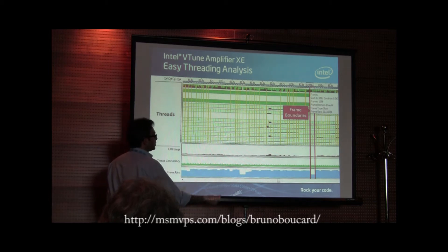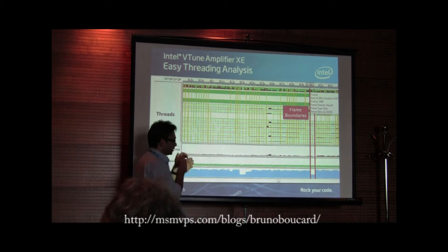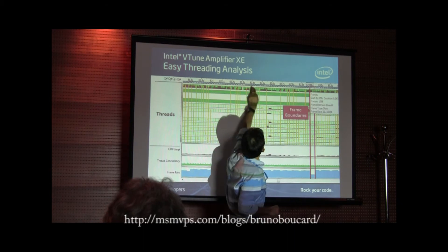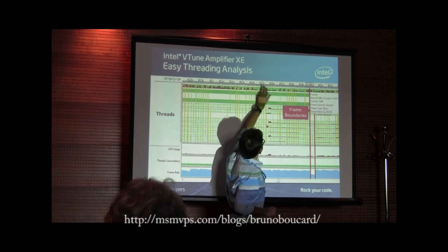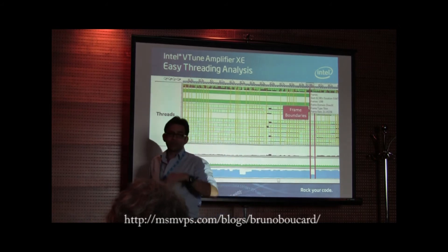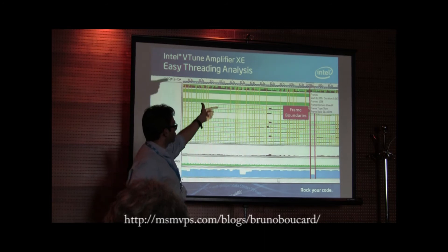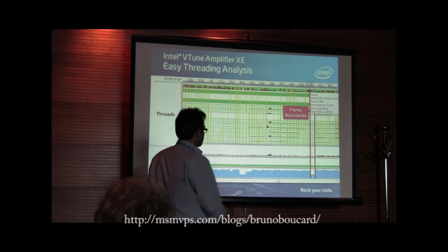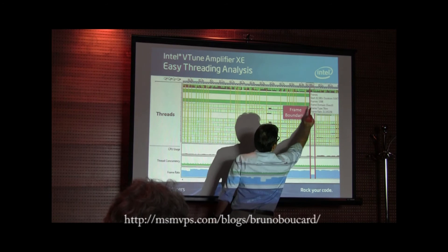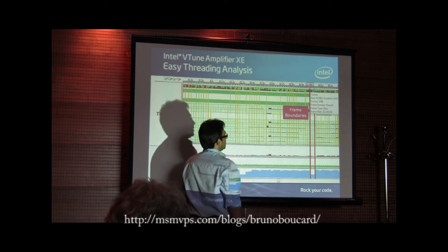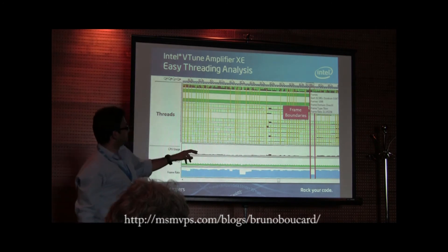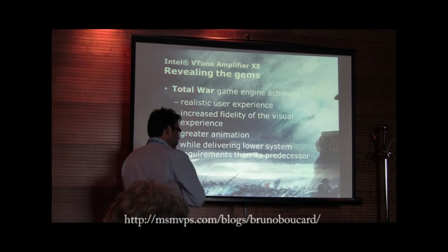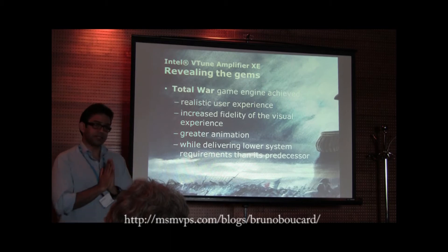Once you go deeper into the timeline, you can start seeing the boundaries of the frames — frame, frame, frame. If you highlight a frame you can see which number it is, when it started, and whether it's slow, fast, or good. So you get this categorization very quickly. Here I can see my frame rate went down; I highlight that frame and see it was frame 1098 and the frame rate was 21 frames per second.